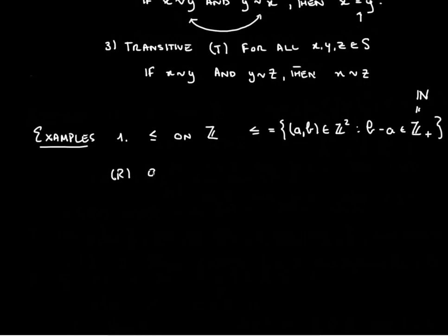So actually this is equal to the set of natural numbers. Now, it is reflexive because we have a is smaller or equal to a for all integers a. Anti-symmetry: if we have an integer that is smaller or equal to b and b is smaller or equal to a, then a is equal to b.